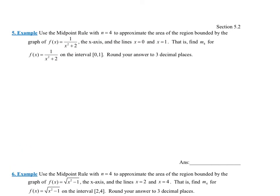Let's see some more examples with bad numbers that came from the textbook. It says: use the midpoint rule with n equals 4 to approximate the area of the region bounded by the graph of f of x equals 1 over x squared plus 2, the x-axis, the lines x equals 0 and x equals 1. Round your answers to three decimal places.